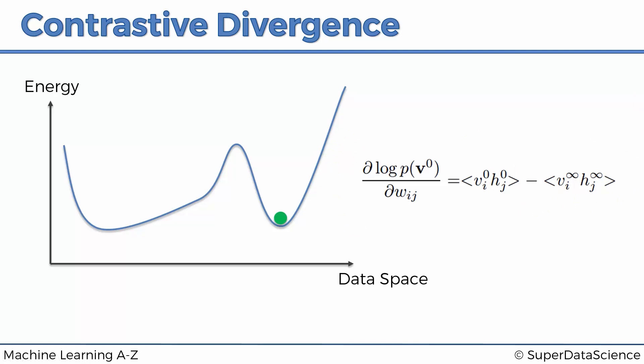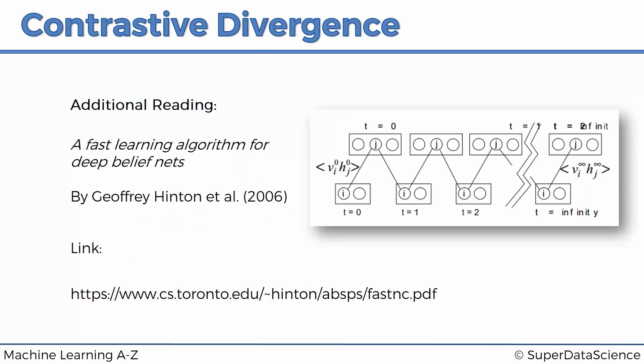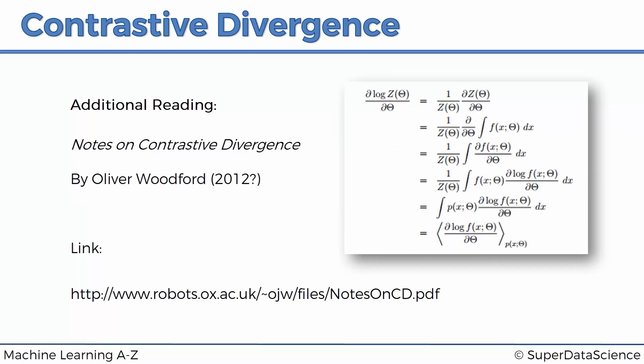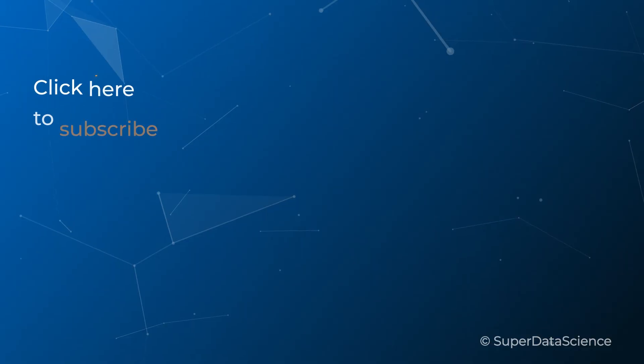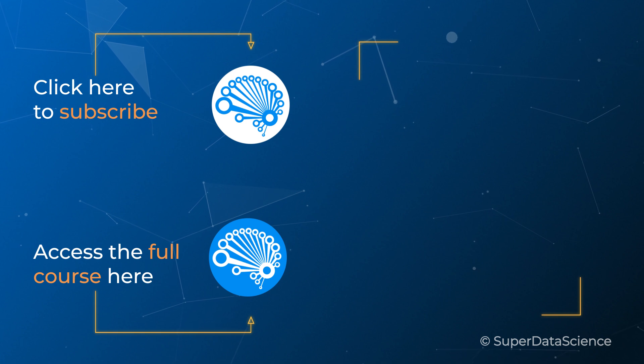If you'd like to go deeper on contrastive divergence, there are a couple of papers to look at. The first is a great paper by Geoffrey Hinton and others from 2006 called 'A Fast Learning Algorithm for Deep Belief Nets,' which contains the diagram we discussed. For a more mathematical treatment of the gradients, look at 'Notes on Contrastive Divergence' by Oliver Woodford, approximately from 2012 — it's a concise three-pager. Links are included in the additional resources. Make sure to check out the other videos to continue your learning.